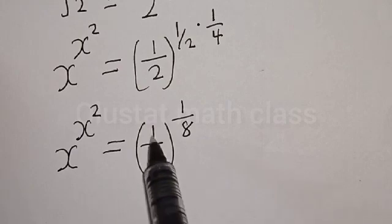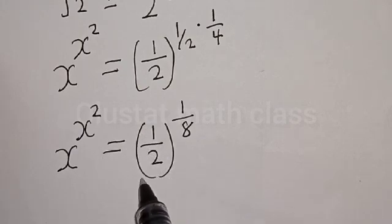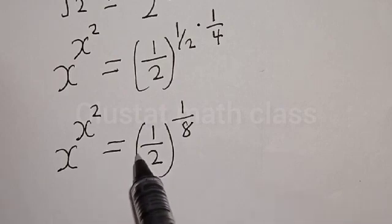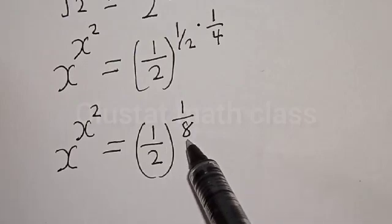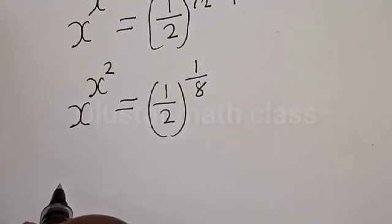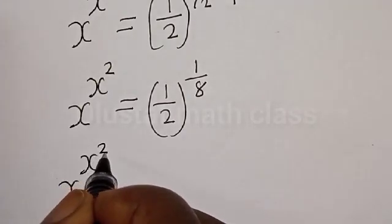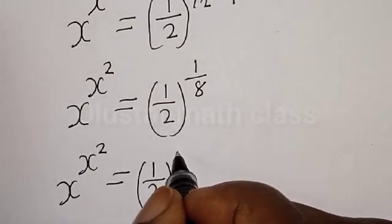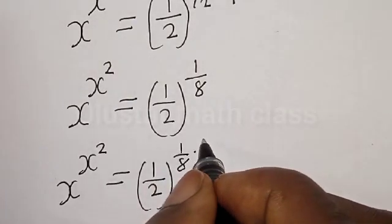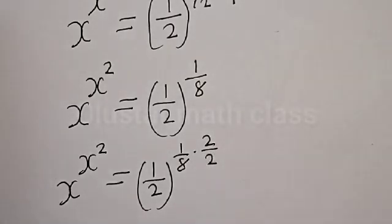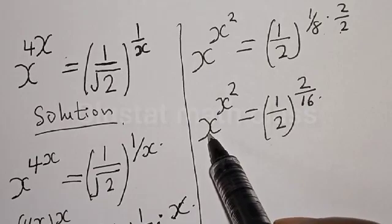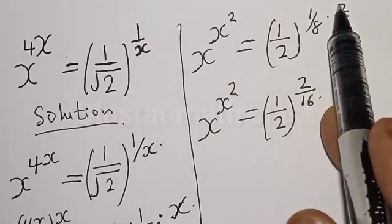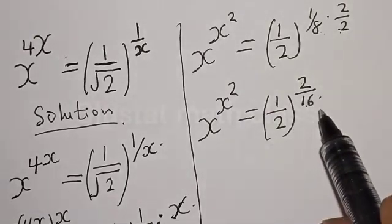If you are multiplying 1 by any number you are going to get the number back. Now if you multiply 1 by 1 million you get 1 million back. In this equation, the right hand side is going to be multiplied by 2 divided by 2, because 2 divided by 2 is 1. So we have x raised to power x squared equal to 1 divided by 2, raised to power 1 divided by 8, multiplied by 2 divided by 2. This gives us 1 divided by 2 divided by 2, that is one-half divided by two, that is one-half, raised to power 1 times 2 that is 2, then 8 times 2 that is 16.